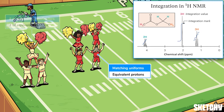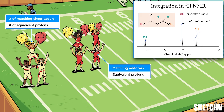The two formations contain a different number of people because the integration value of a peak differs depending on the number of equivalent protons it contains. Just like there's more space beneath the four-person formation, the greater the area under a peak, the more protons it represents.